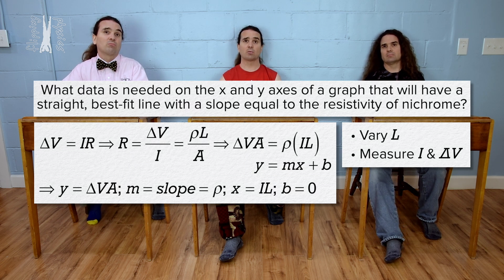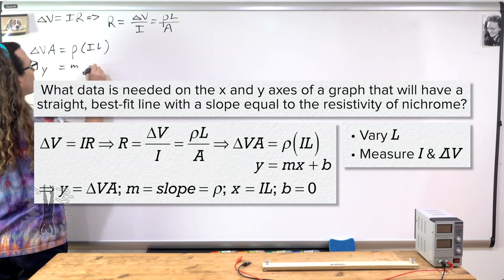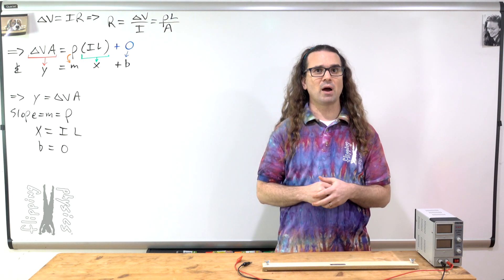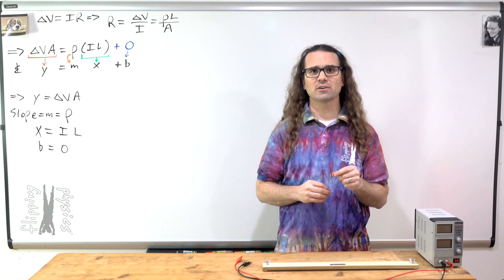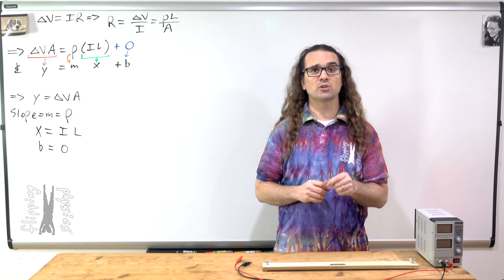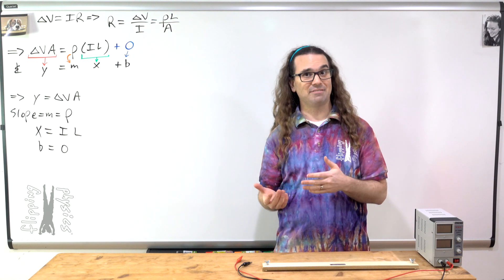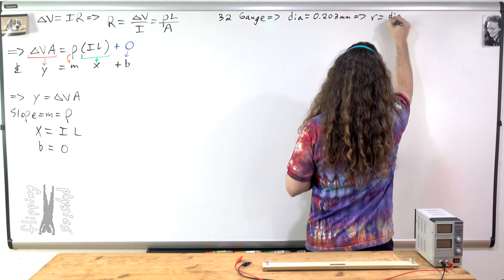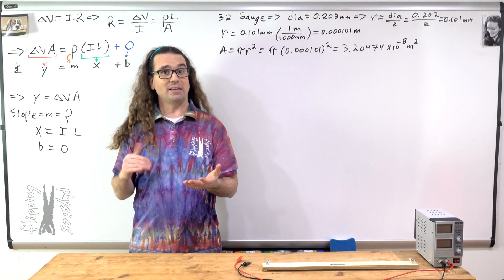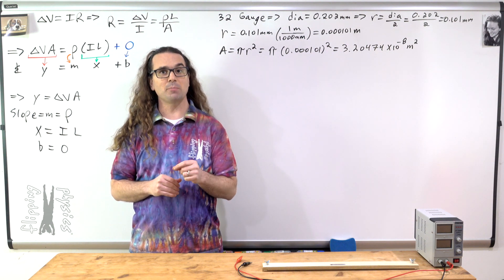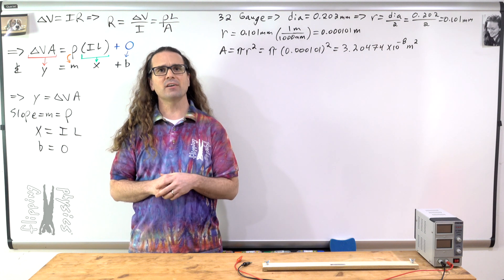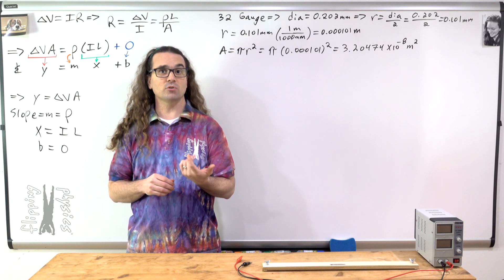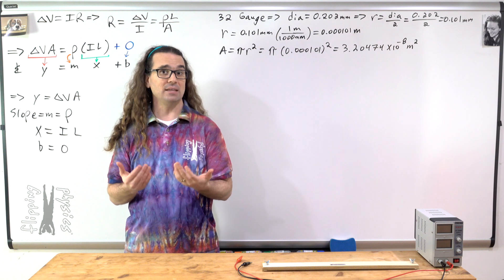But we do need the diameter of the wire to get the cross-sectional area of the wire. This nichrome wire is a 32 gauge wire which means according to American wire gauge standards, the wire has a diameter of 0.202 millimeters and a radius of 0.101 millimeters or 0.000101 meters. With that and knowing the cross-sectional area of the wire has the shape of a circle, we can determine the cross-sectional area. It equals pi times radius squared, or pi times 0.000101 squared, which equals 3.20474 times 10 to the negative 8 meters squared.